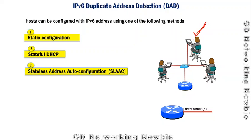Whatever method is used, once a client receives an IPv6 address, there is always a chance that some other host on the network may be using the same IPv6 address. For example, if we have three host machines and we assign an address like 2001:... to one of them, it may happen that another host machine is already using that same IPv6 address.